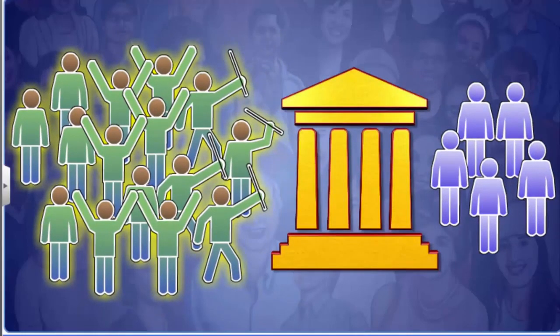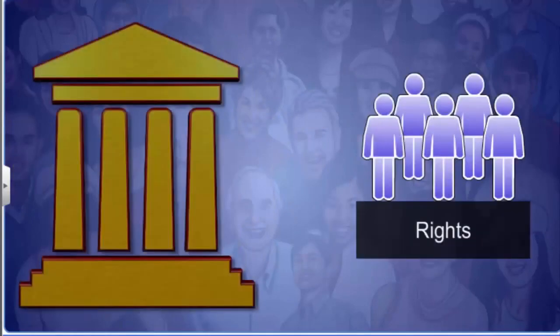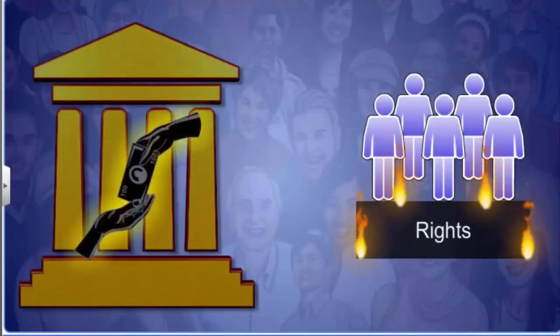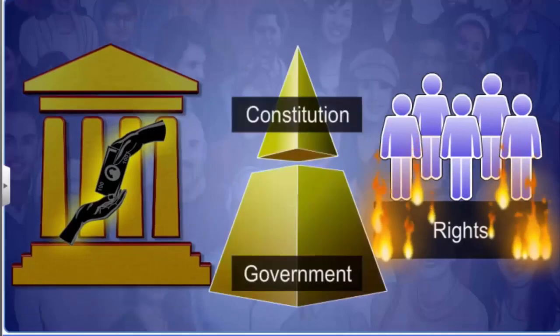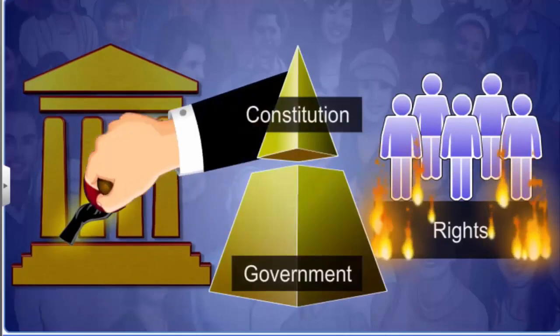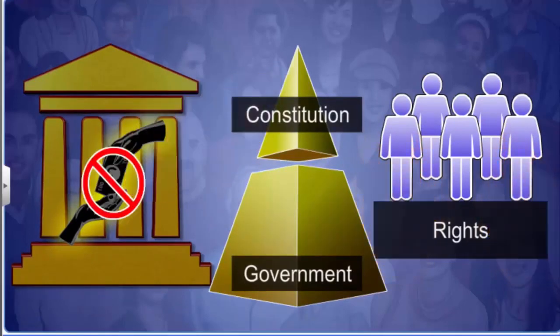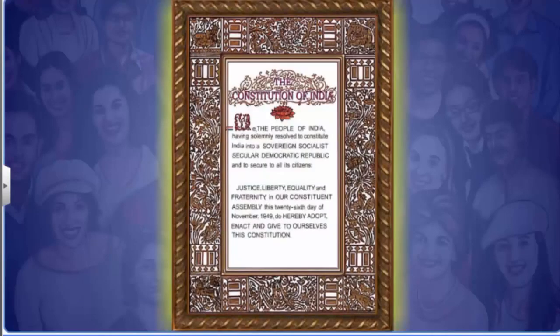When majority groups try to dominate minorities, it is the government's duty to intervene and protect the rights of the citizens. However, if the elected government is corrupt, there are many chances that they themselves attack the rights of their own citizens. To handle such situations, some rights need to be enforced by an authority higher than the government, such as the constitution. In most democracies, such as in India, the basic rights of a citizen are documented in the constitution, which serves as a set of rules for the government to follow.